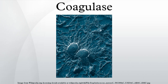Bound coagulase is part of the larger family of MSCRAMMs. The coagulase test has traditionally been used to differentiate Staphylococcus aureus from coagulase negative Staphylococci. S. aureus produces two forms of coagulase: bound coagulase, otherwise known as clumping factor, can be detected by carrying out a slide coagulase test, and free coagulase can be detected using a tube coagulase test.